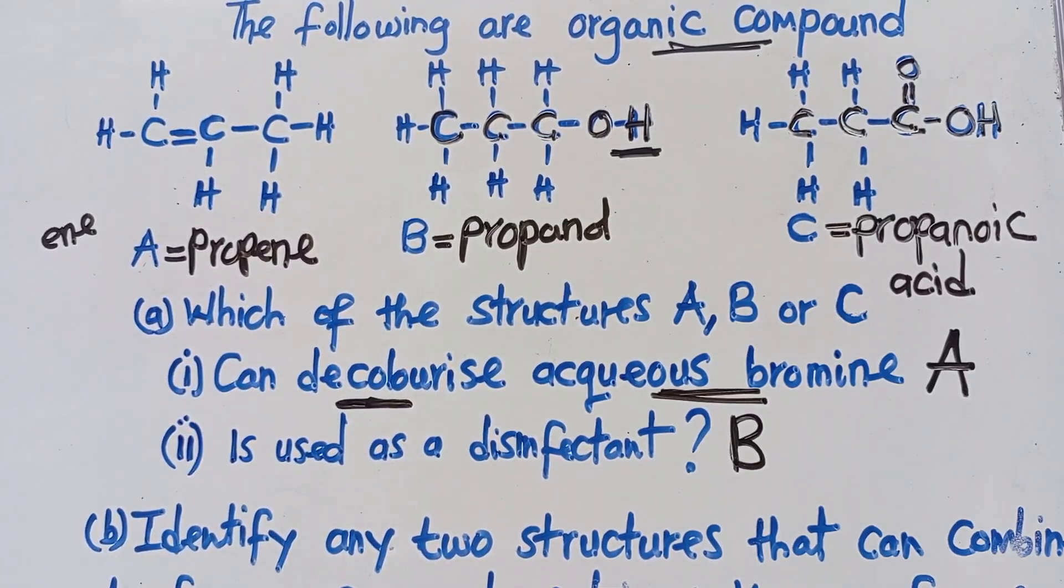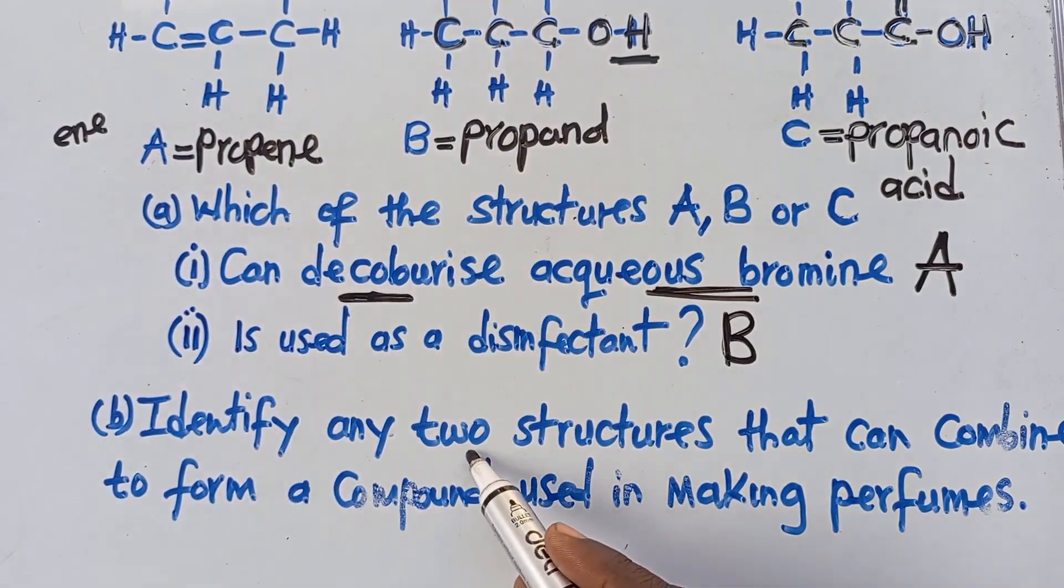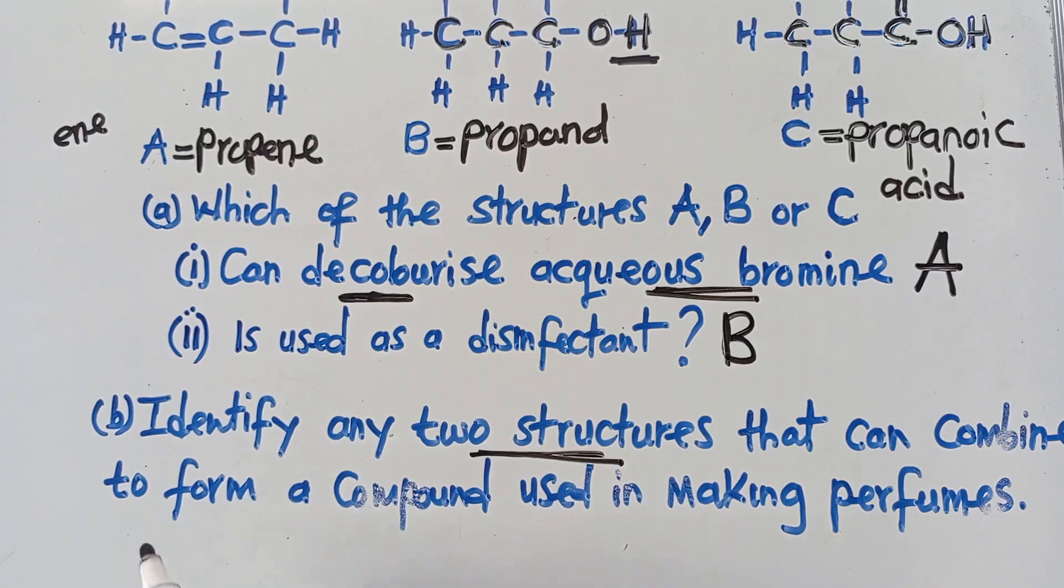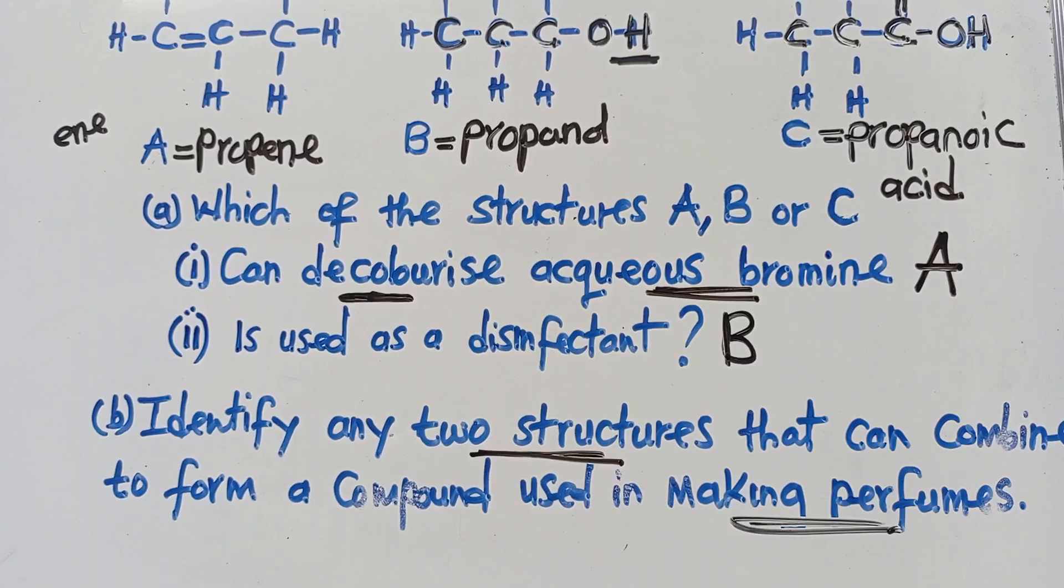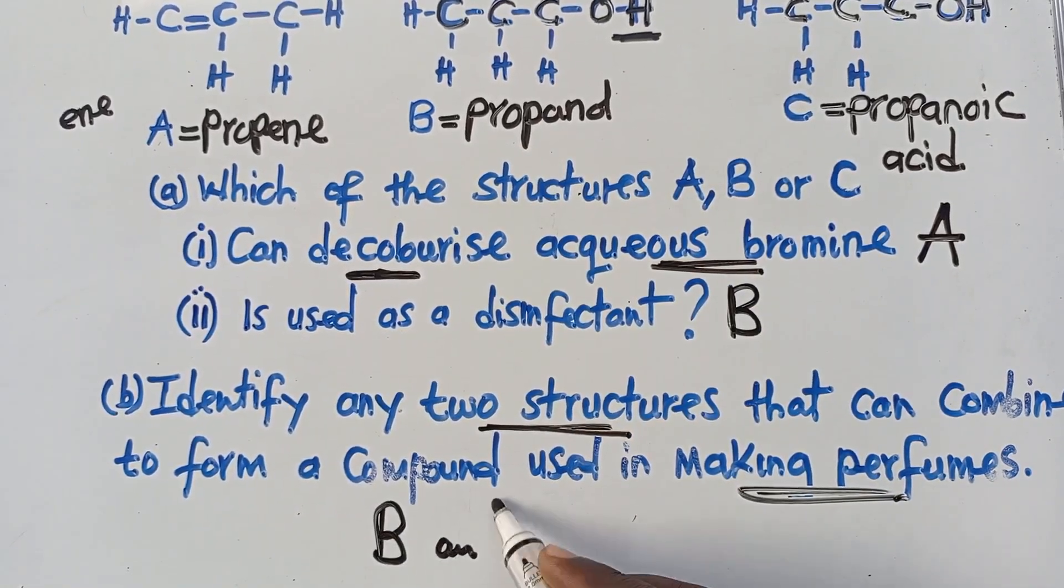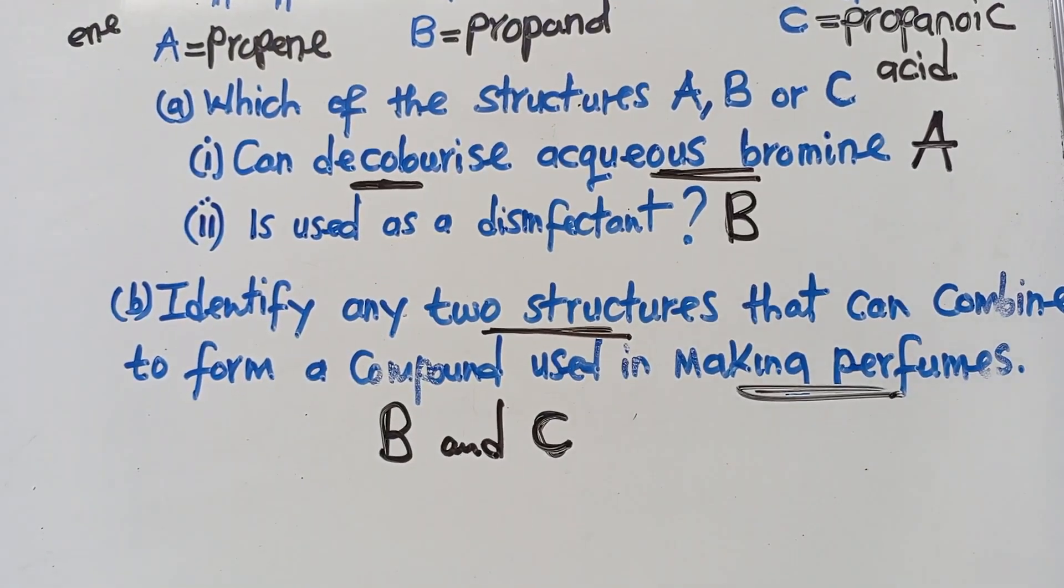We now move on to the last question that is here. I guess you are able to see this wonderful last question. Say, identify any two structures that can combine to form a compound used in making perfumes. The moment you just hear making perfumes, just know that you are forming an ester. So how is an ester formed? An ester is a compound formed when an alcohol reacts with a carboxylic acid. So which one is an alcohol? B. Which one is a carboxylic acid? C. So when B and C combine they are going to form a compound that is used in making perfumes, that is an ester. Sweet smell. As simple as that.